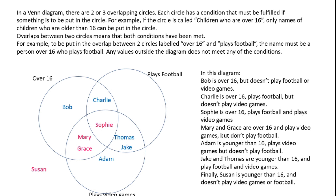If you look at this Venn diagram here: Bob is over 16 but he doesn't play football or video games — you can see this because Bob is in the circle 'over 16' in the part with no overlaps. Charlie is over 16 and plays football but does not play video games — you can see this because Charlie is in the overlap between 'over 16' and 'plays football' but not in 'plays video games'. Sophie is over 16, she plays football, and she plays video games — her name is in the overlap of all three circles.